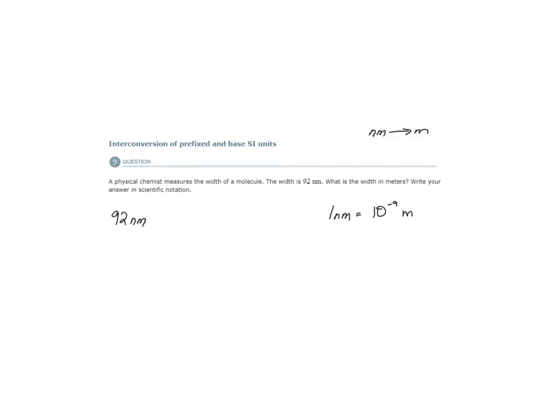Now that I have this conversion factor, let's express it as either one nanometer per 10 to the minus 9 meters or 10 to the minus 9 meters for every one nanometer. So these are two expressions we've derived from this conversion factor. They both mean the same thing.